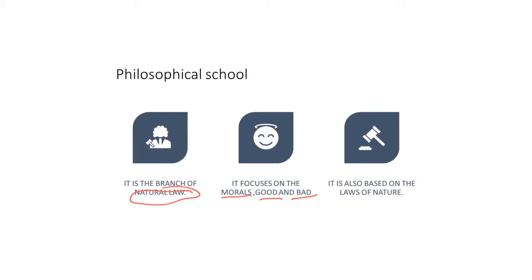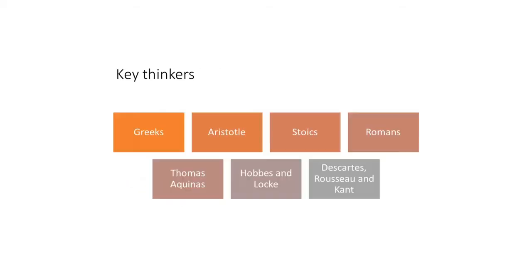Now the key thinkers of this school—as you know, natural law has a very big historical significance. So the key thinkers we know are from the Greeks, Aristotle, the Stoics, the Romans.